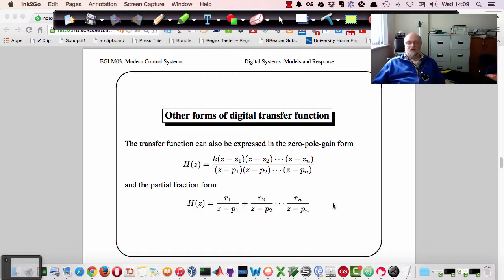It's convenient for some cases to consider the zeros and the poles of the system. So we might write the transfer function in pole zero gain form using z as the operator here. And z1, z2, et cetera, are the zeros. P1, p2, et cetera, are the poles. This is very similar to what we would use in Laplace transforms.